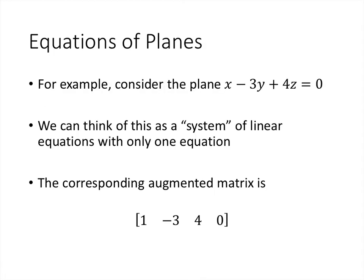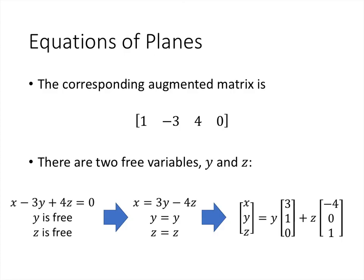We're going to think of that single equation as actually being a system of linear equations with only one equation. And so we're going to solve that in the normal way, although it's going to seem a little weird because we only have the one equation. But the corresponding augmented matrix has one row, because we only have one equation: [1, -3, 4, 0]. That's already in reduced echelon form, so we don't have any row reduction to do. So let's just go ahead and write our solution in the form of the variables. So our one row corresponds to the equation x - 3y + 4z = 0, and y and z are both free variables.